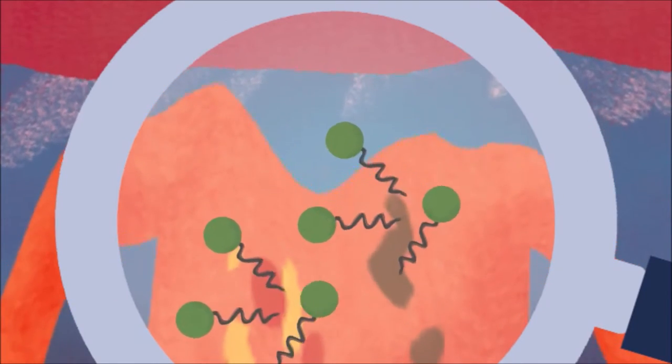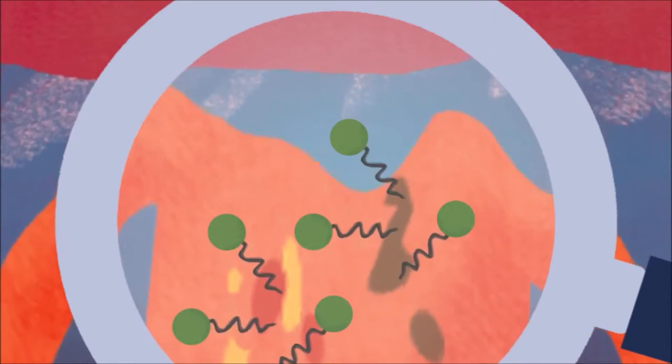The chemicals used to achieve stain removal and whiter-than-white clothes are a complex mixture, containing surfactants, which allow the water and the greasy stains to mix, making stains removable.